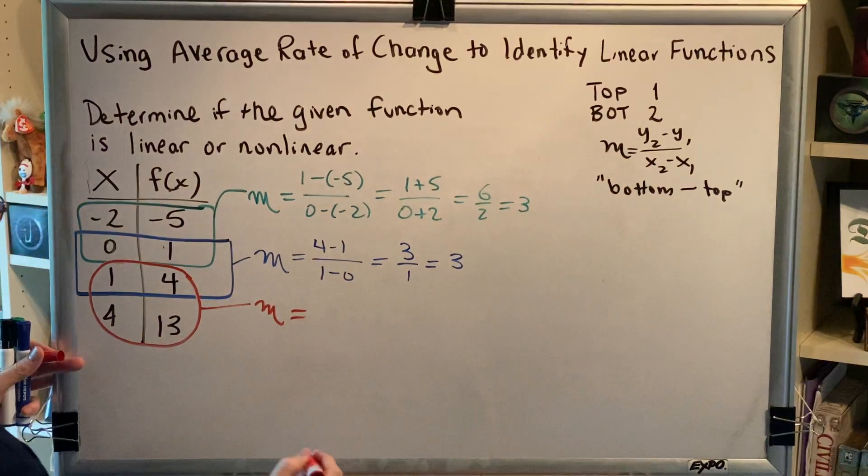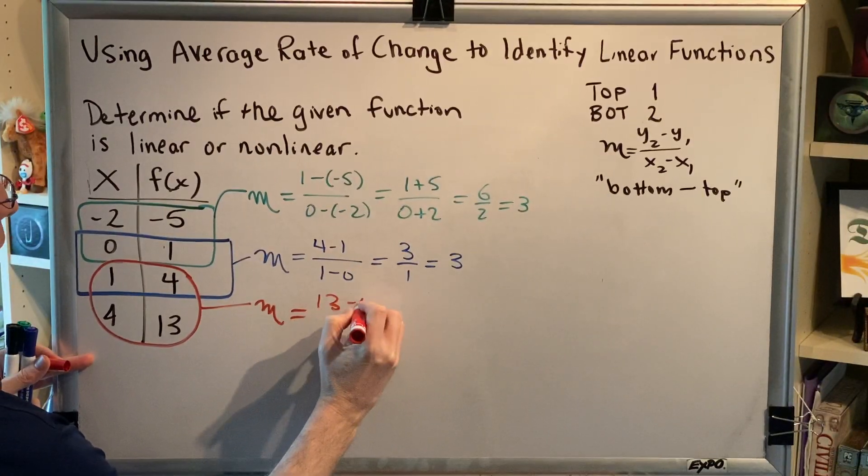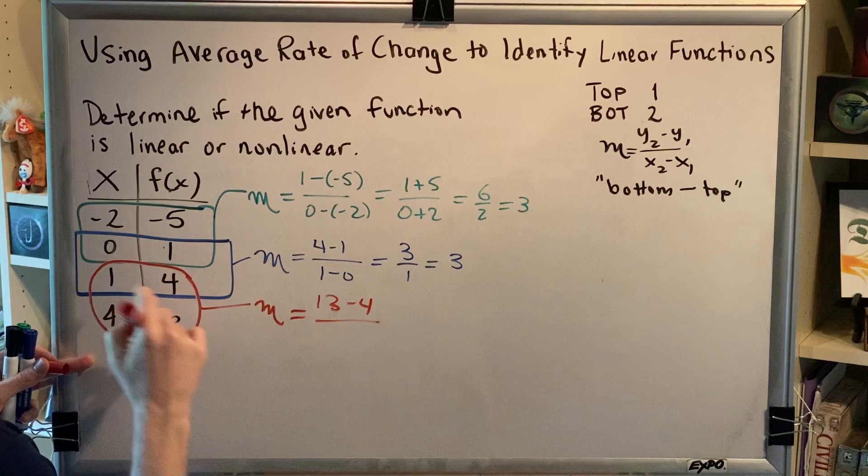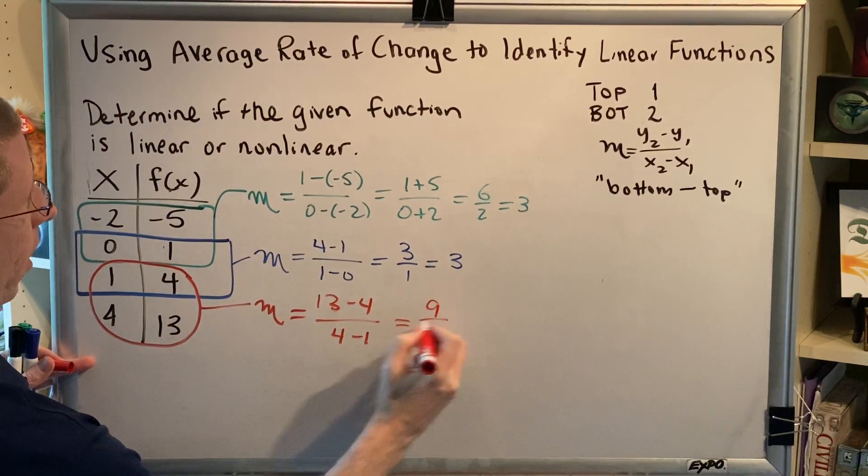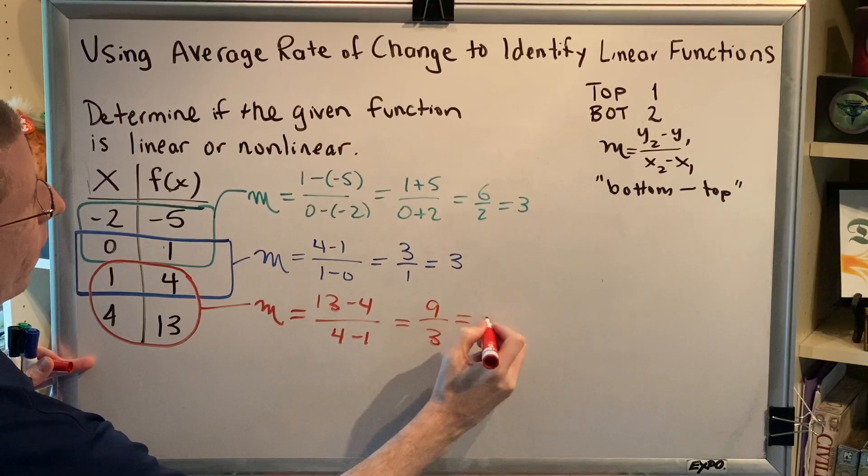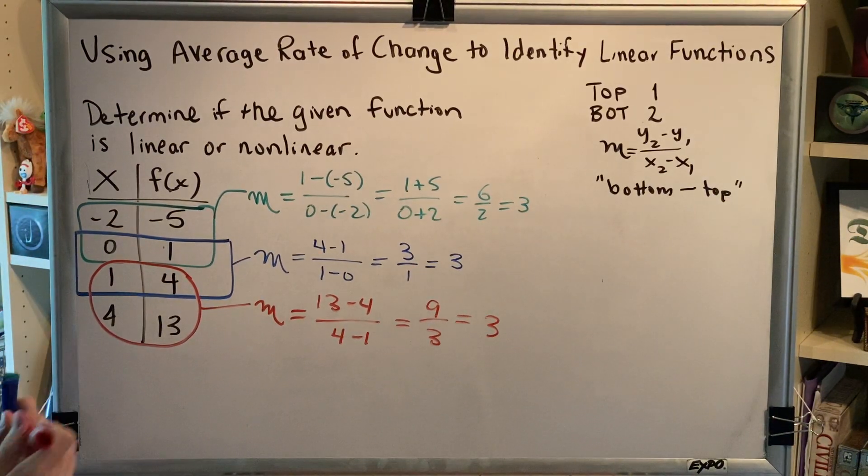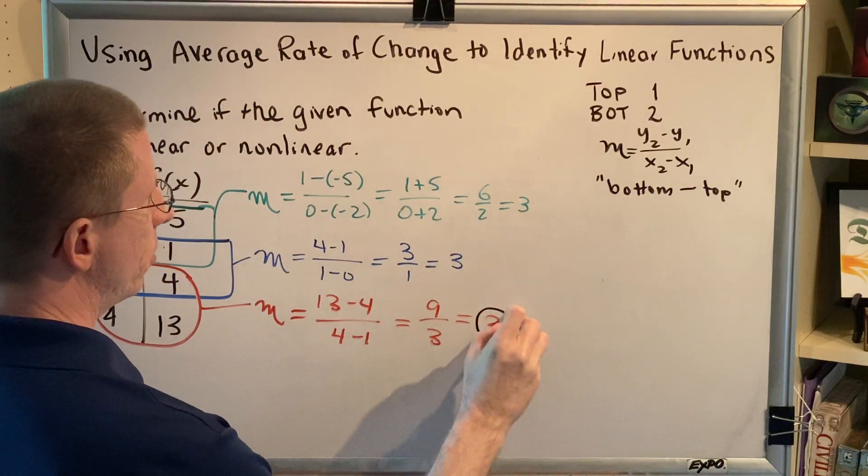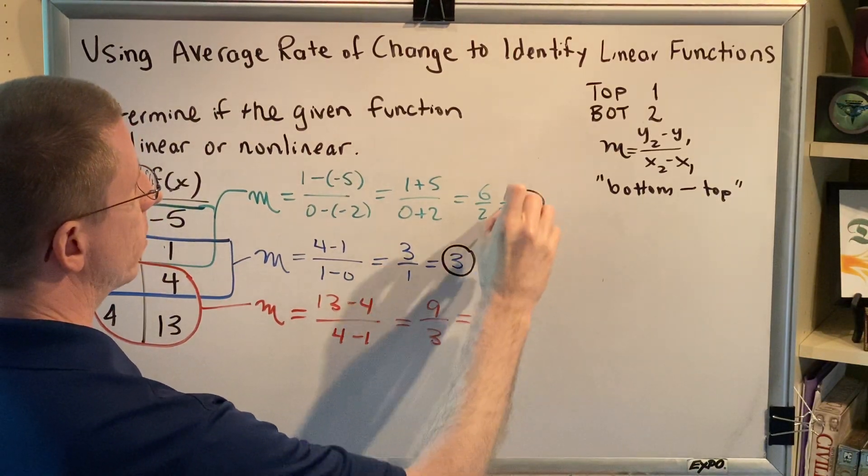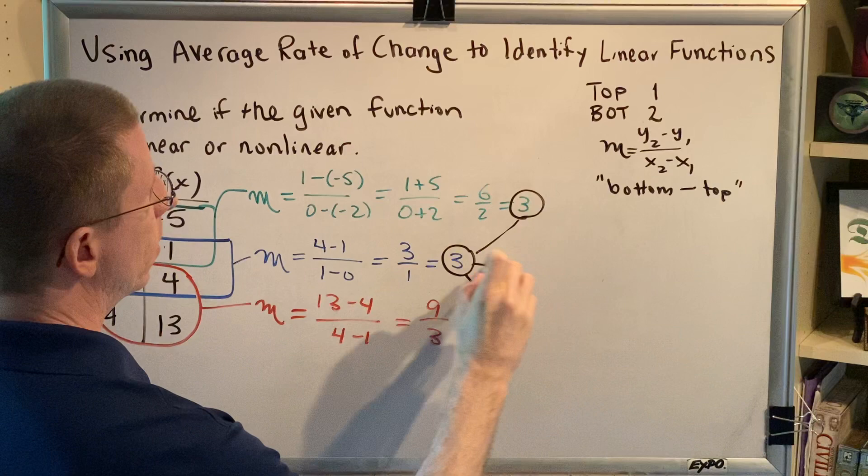All right, y's bottom minus top would be 13 minus 4. x's bottom minus top would be 4 minus 1. 13 minus 4 is 9, 4 minus 1 is 3, 9 divided by 3 is 3. And so we find that all three pairs of adjacent points have the same slope.